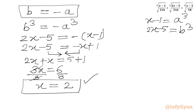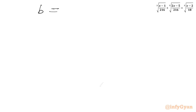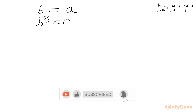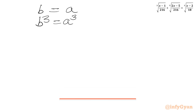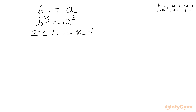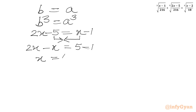Now the second case is b equal to a. So b cubed equals a cubed, meaning 2x minus 5 equals x minus 1. Taking x to the left and minus 5 to the right: 2x minus x equals 5 minus 1, giving x equal to 4. So we have in total 2 real solutions: x equal to 2 and x equal to 4.